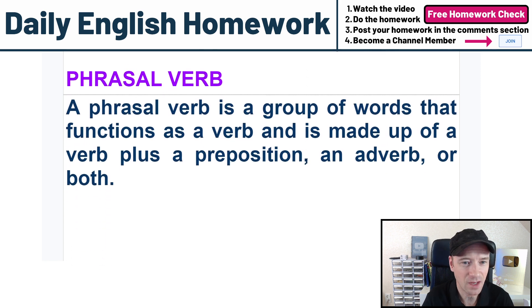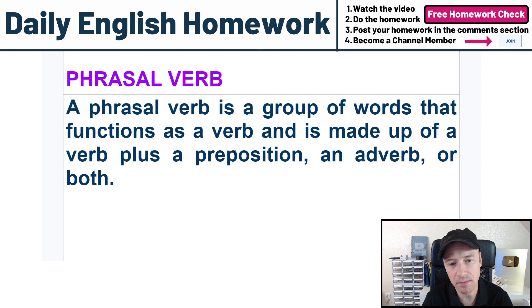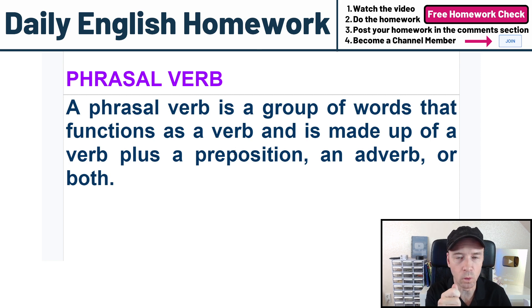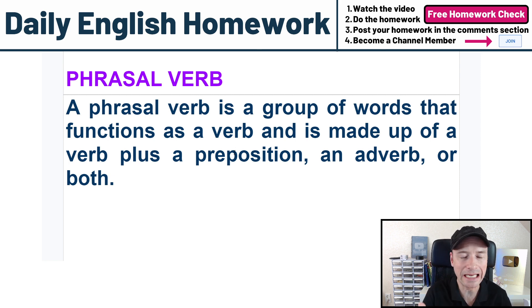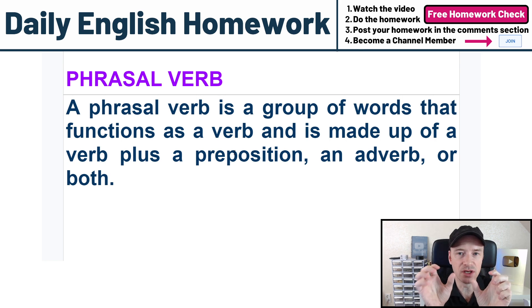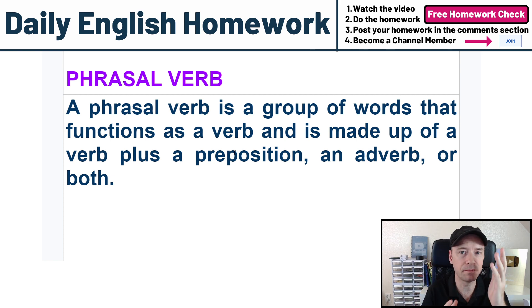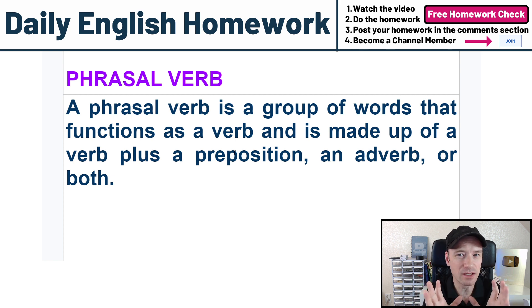What is a phrasal verb? A phrasal verb is a group of words that functions as a verb, and is made up of a verb plus a preposition, an adverb, or both. A verb is usually one word — like walk, work, or read. A phrasal verb is going to be the verb and the preposition. Prepositions are like in, on, after, up, down. When you see the verb and the preposition, not always, but very often, that is going to be a phrasal verb.